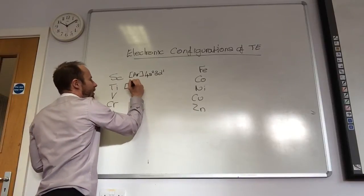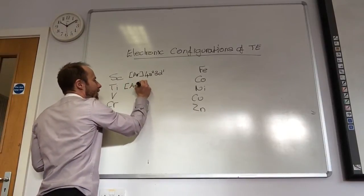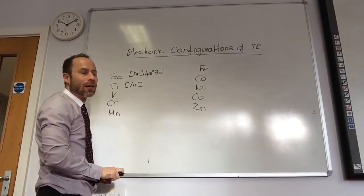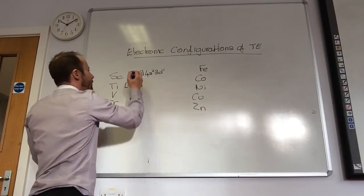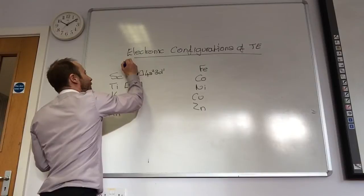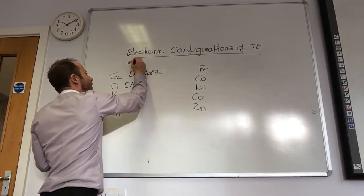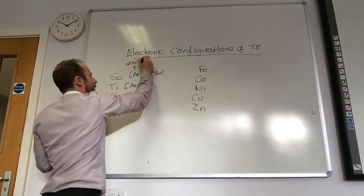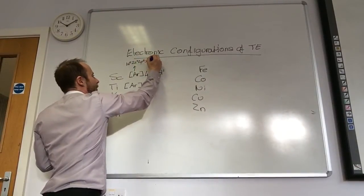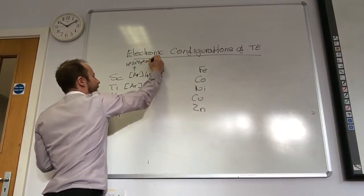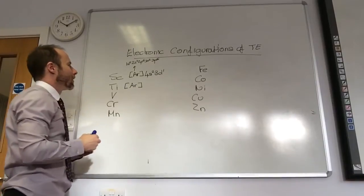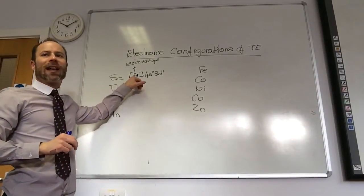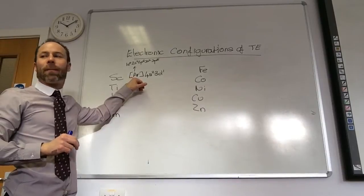And it saves us writing it all out. So titanium... Argon has an electronic configuration of 1S2, 2S2, 2P6, 3S2, 3P6. So it goes argon, then potassium, then calcium, then scandium. You can only put noble gases in square brackets.